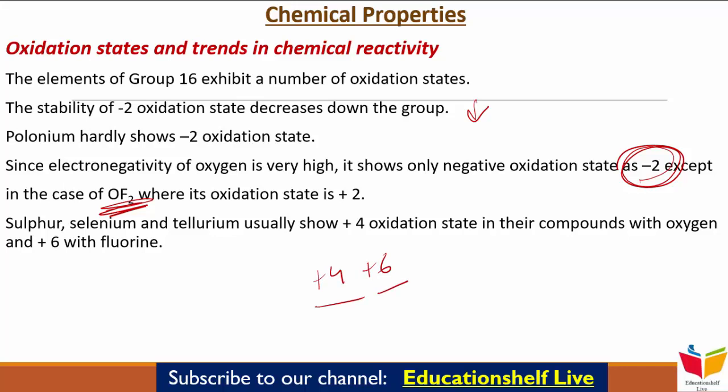Sulfur, Selenium और Tellurium usually +4 oxidation state दिखाते हैं Oxygen के साथ compounds में, और Fluorine के साथ +6 oxidation state। +6 oxidation state की stability नीचे जाने पर कम होती है, और +4 की बढ़ती है, क्योंकि Inert Pair Effect आता है। +4 और +6 oxidation state में जो bonding होती है, वो primarily covalent होती है।